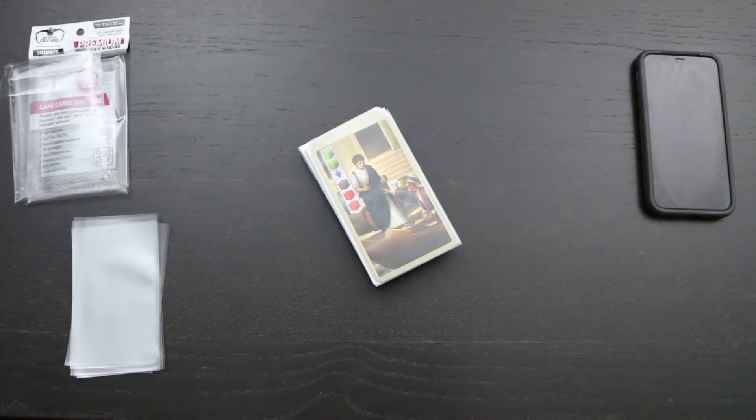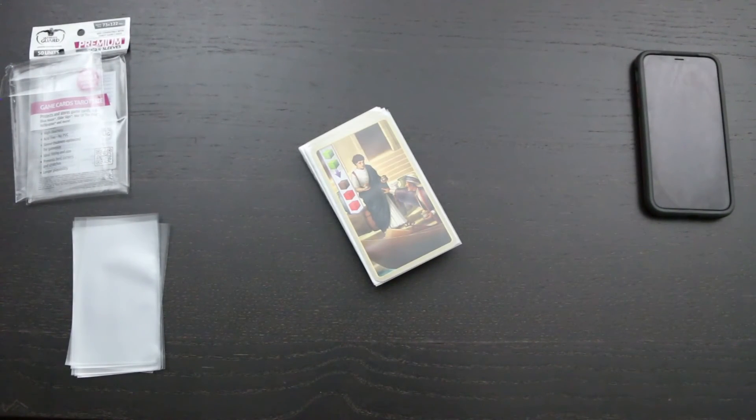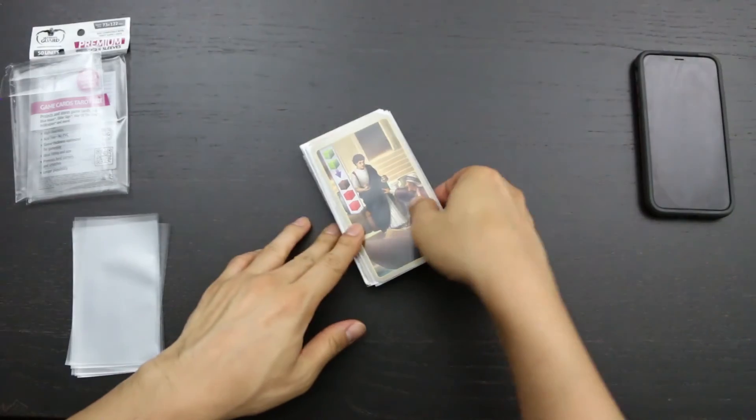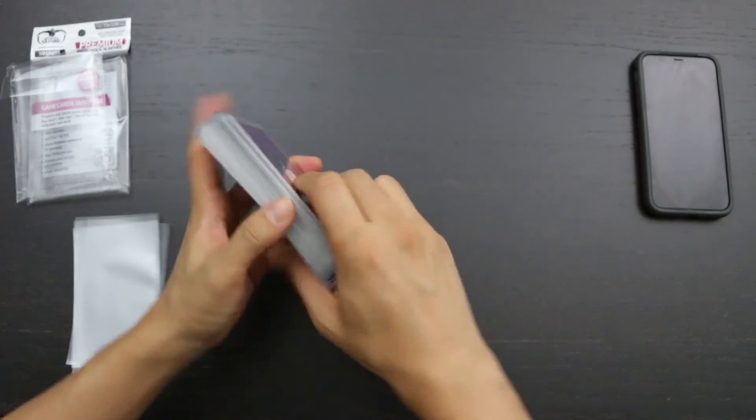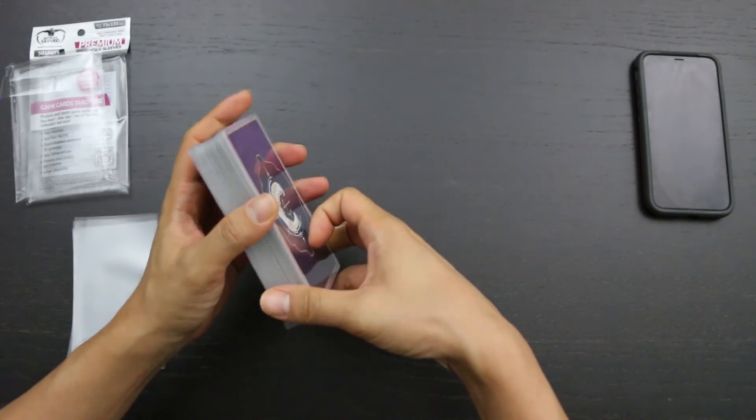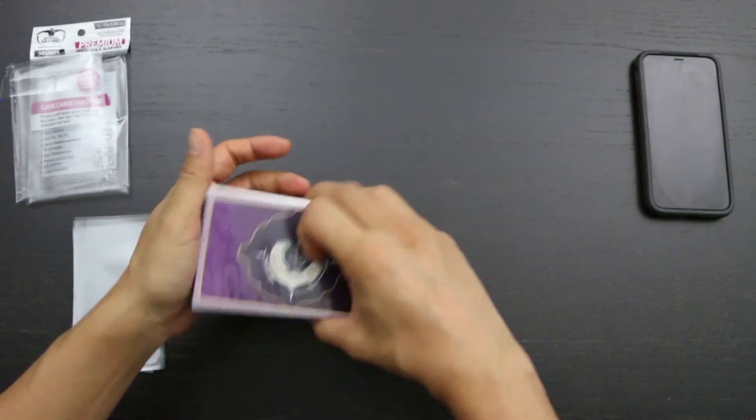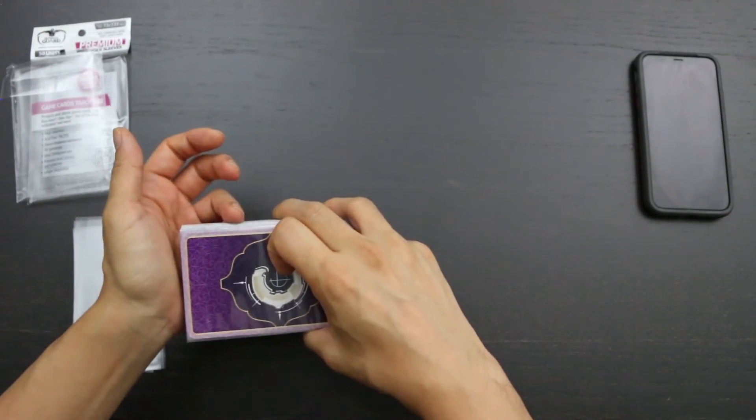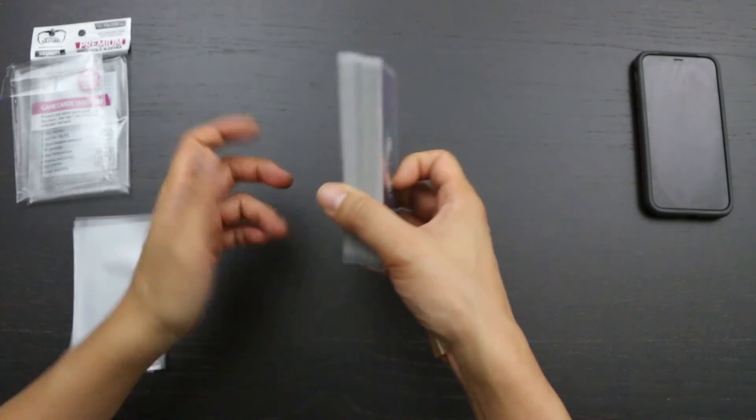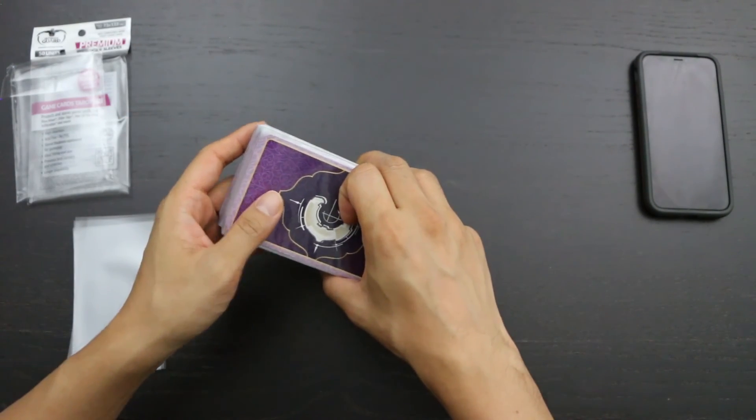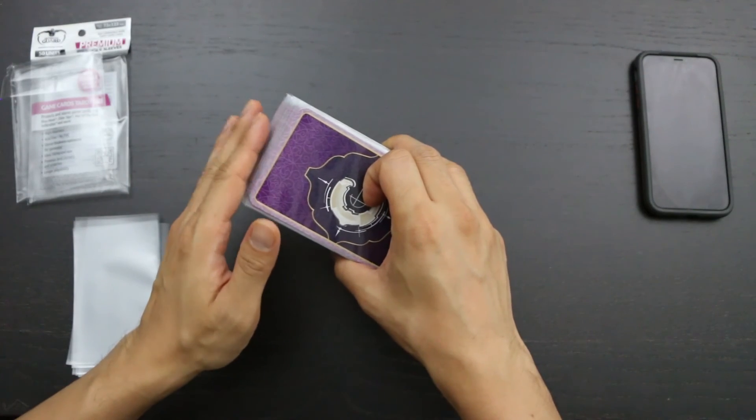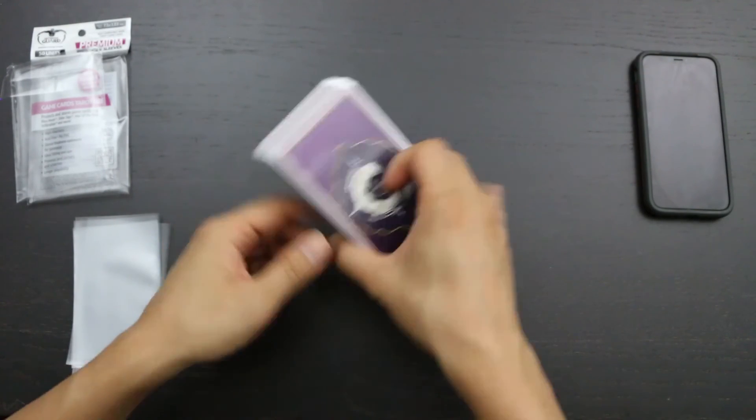So those are my thoughts on Ultimate Guard's premium soft sleeves. If you have any experience with them, let me know what your experience is in the comments below. If you have any experience with these or any other size tarot card sleeves, you can also click on the links in the description box below. They will take you to surveys where you can talk about their relative consistency and their relative durability. And those results will be shared at the Inic Games' resource page.